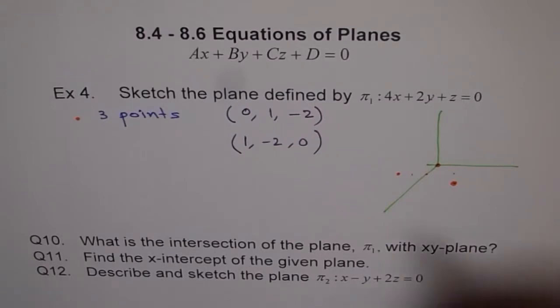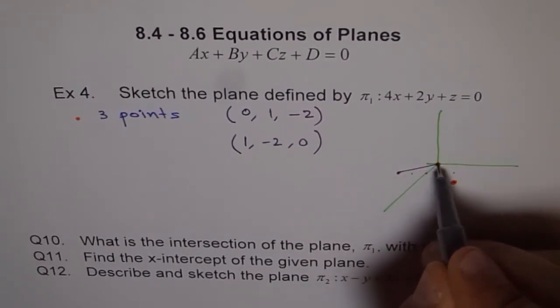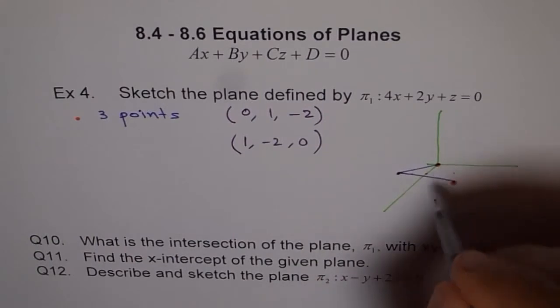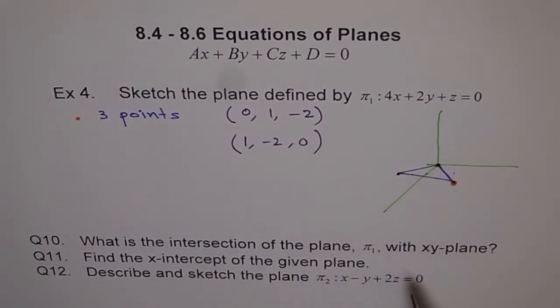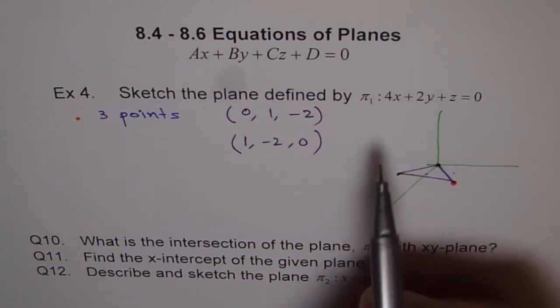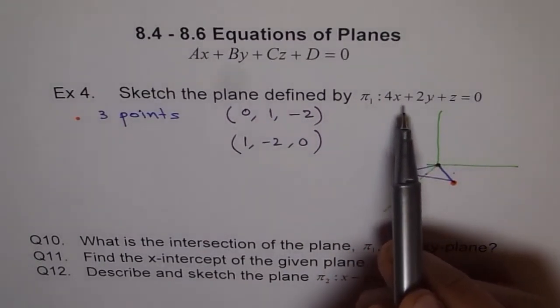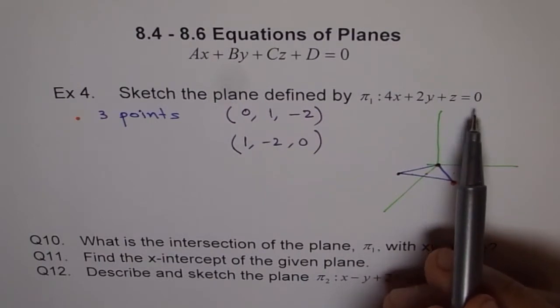So, that is our third point. If we join these three points, then that kind of represents our plane. And this plane is pi 1. 4x plus 2y plus z equals to 0. Okay?